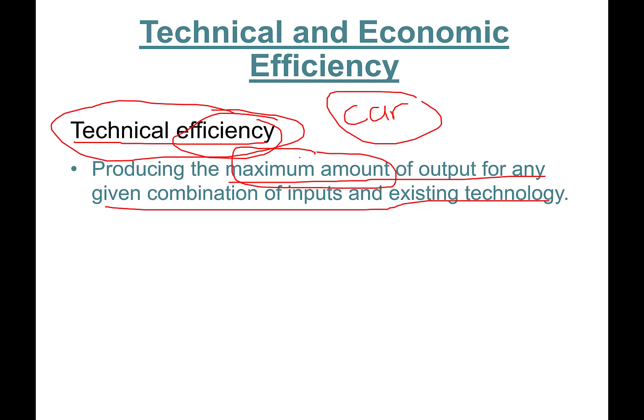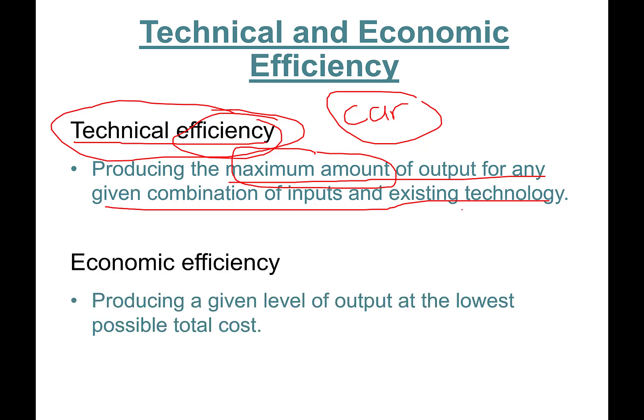We also have economic efficiency. This is producing a given level of output at the lowest possible cost. Technical efficiency is producing maximum amount, but economic efficiency is producing a certain quantity at the lowest possible cost.